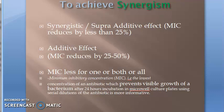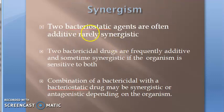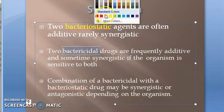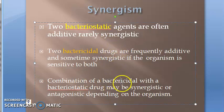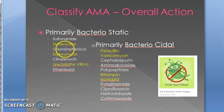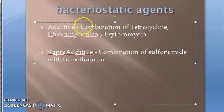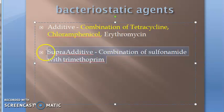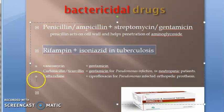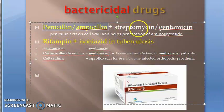You can combine two bacteriostatic agents, two bactericidal agents, or one bacteriostatic with one bactericidal drug. Bacteriostatic agents include sulfonamide, tetracycline, chloramphenicol, erythromycin, clindamycin, linezolid, and ethambutol. An example combination of bacteriostatic agents is tetracycline with chloramphenicol. For bactericidal combinations, rifampicin with isoniazid, and penicillin with streptomycin.